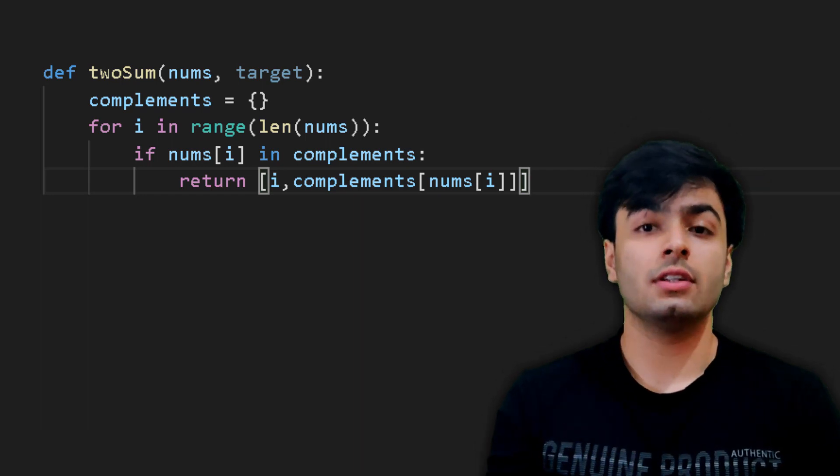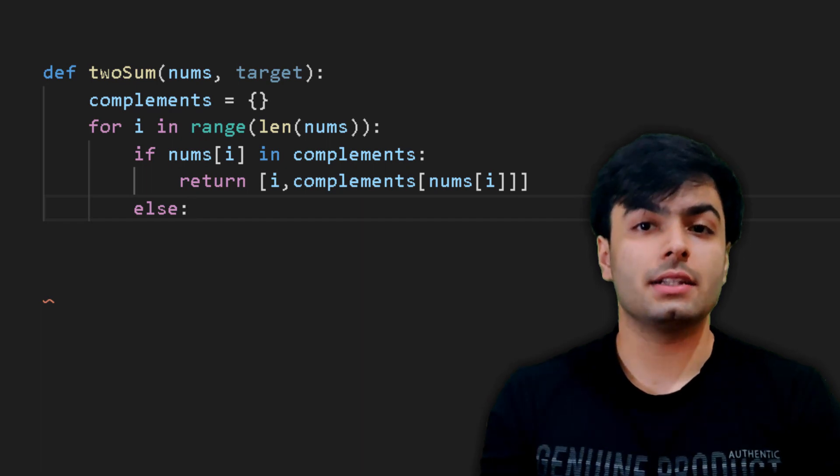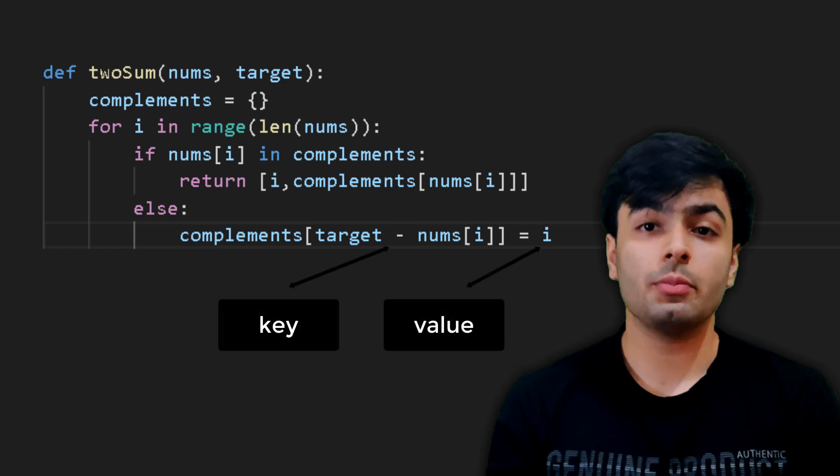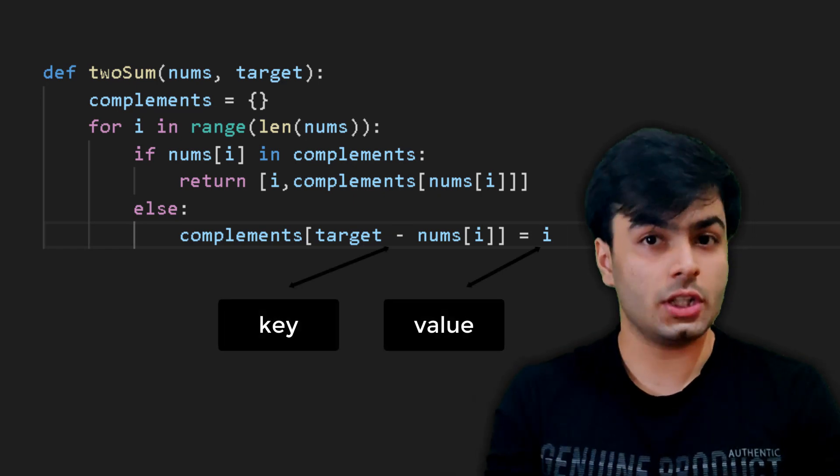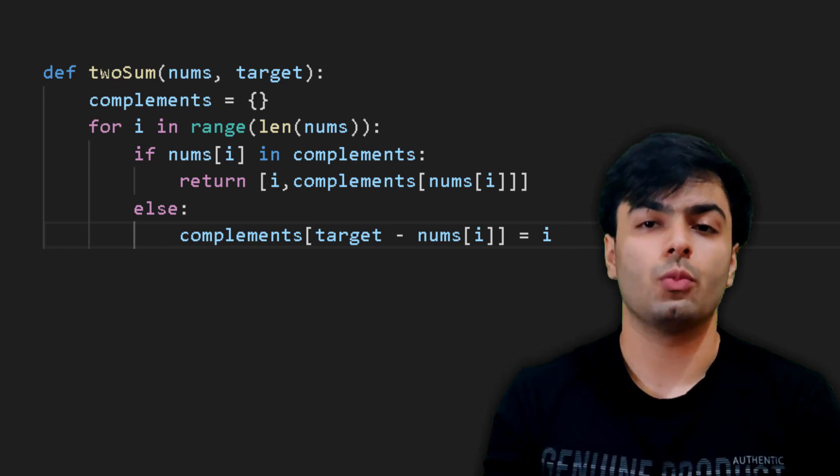If this condition is false, however, then we need to write an else statement where we will simply add an element in the dictionary where the key is the complement of the current term. Remember, this is found by subtracting the current term from the target and the value set to the index number of the current term, which is i.